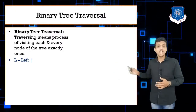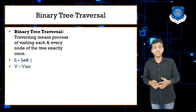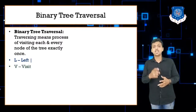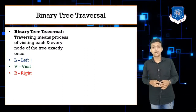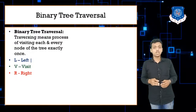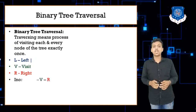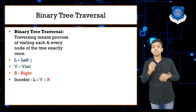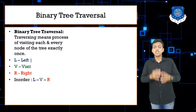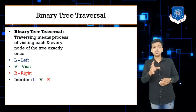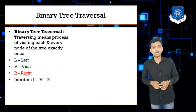The first term is L, which stands for left. Then we have V, which stands for visit, and another term R, which stands for right. So here three terminologies are there: left, visit, and right. In in-order, we just need to traverse or visit the node in a left, visit, and right manner.